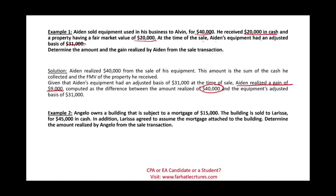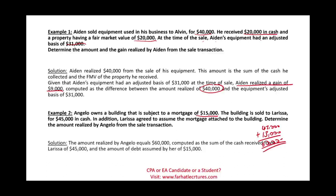Example two: Angelo owns a building subject to a mortgage of $15,000. The building is sold to Larissa for $45,000 in cash. In addition, Larissa assumes the mortgage attached to the building. So Angelo received $45,000 in cash plus $15,000 in mortgage relief, giving a total amount realized by Angelo of $60,000. We would then compare this to the basis to determine the realized gain or loss.